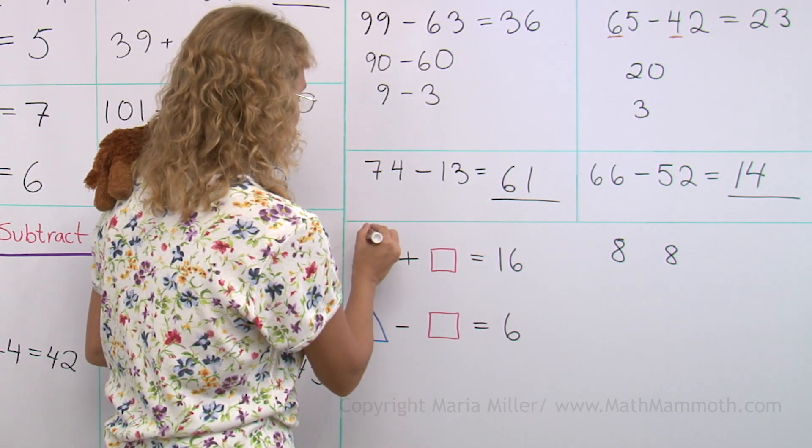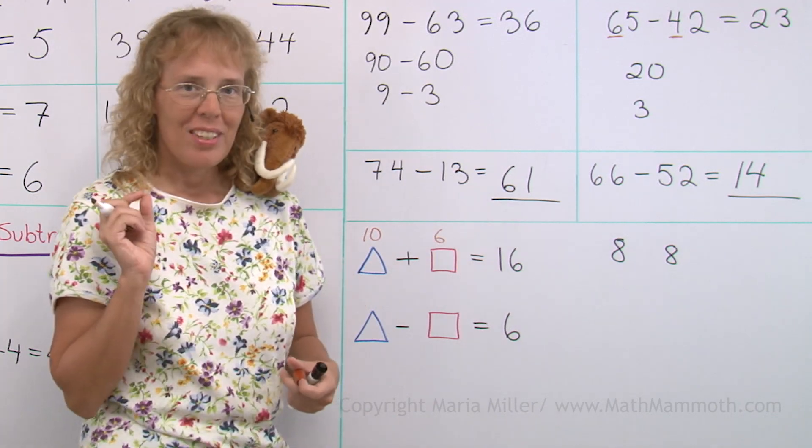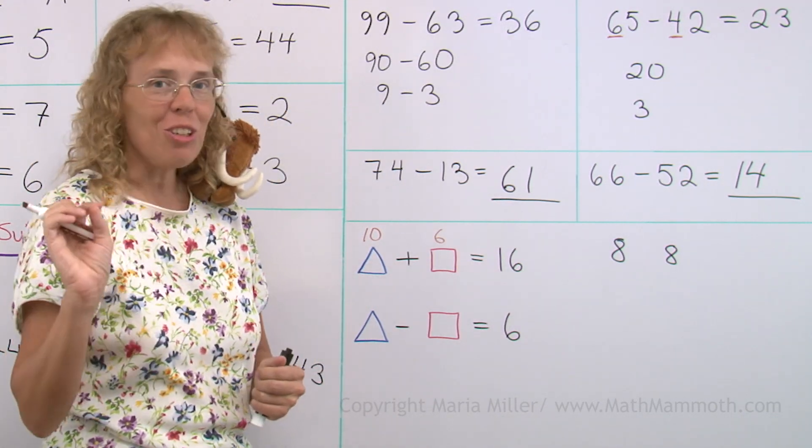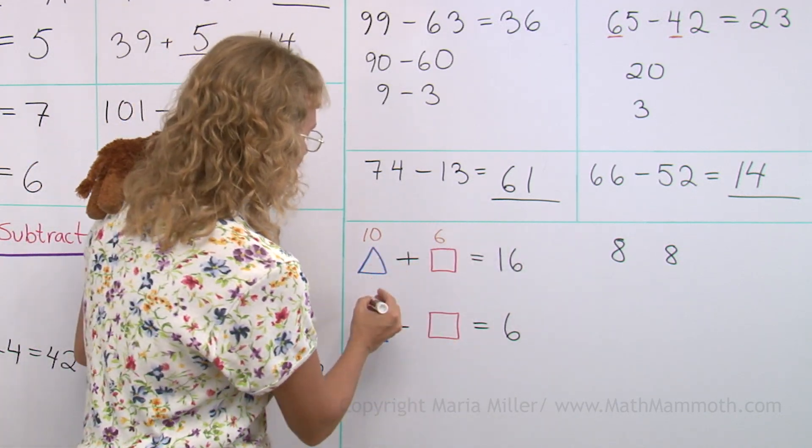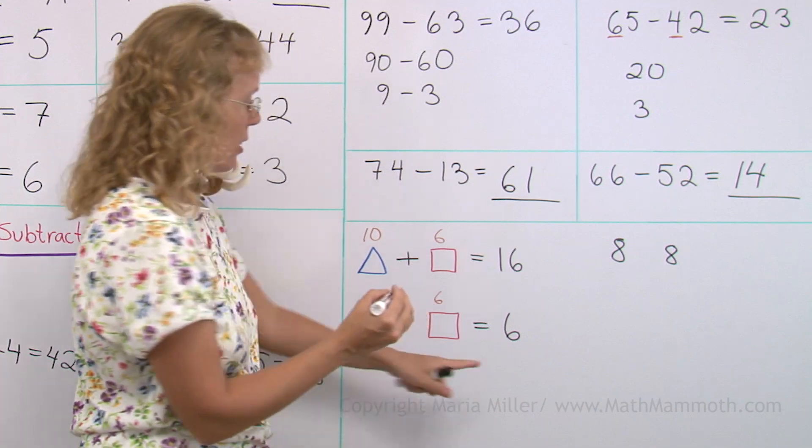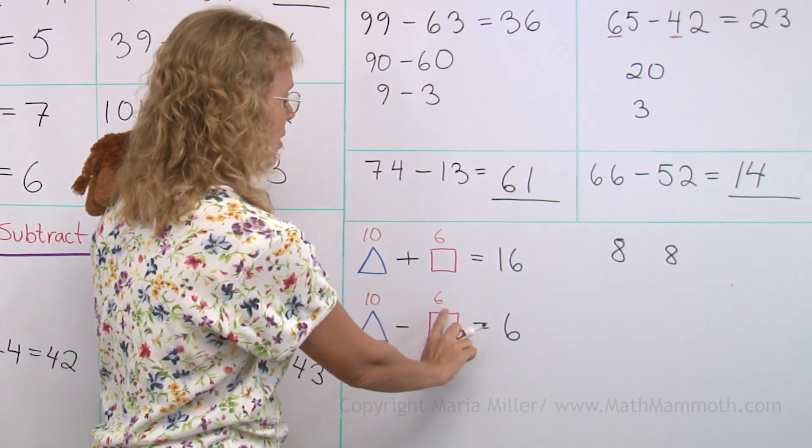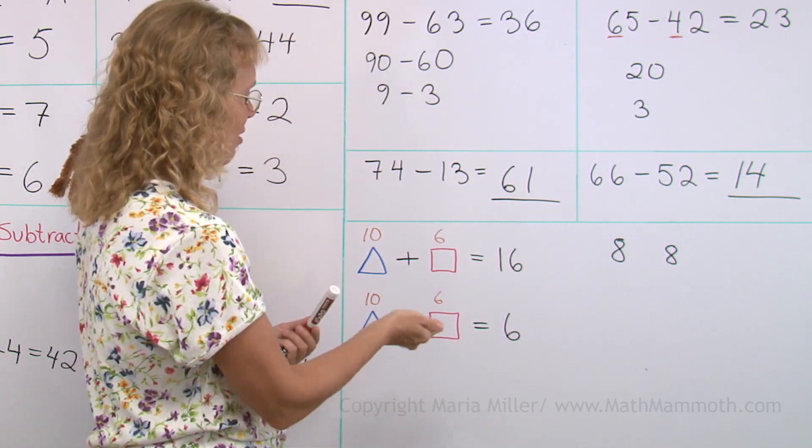Aha, how about 10 and 6? Yeah, 10 and 6. And as we try these different numbers, we are hoping to get closer and closer to the right ones. 10 and 6 makes 16. And then 10 minus 6 makes 4. That's much closer than when we tried 8 minus 8 because that was 0. So 10 minus 6 is 4. It's not working, but it's closer.